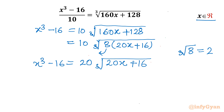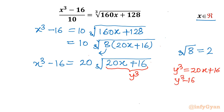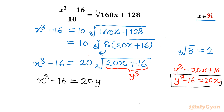Now I will give a substitution. Let us consider the term (20x + 16) as y³. So y³ = 20x + 16, or equivalently y³ - 16 = 20x. Now I will frame two equations. The first equation from the substitution gives us x³ - 16 = 20y, since cube root of y³ is y.